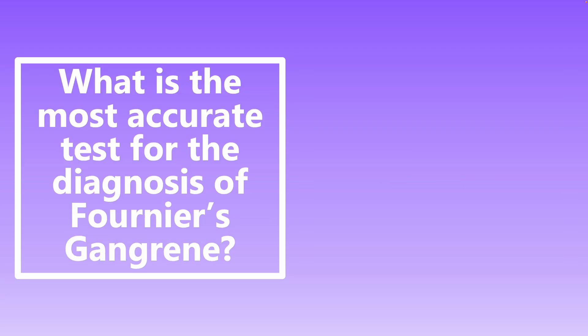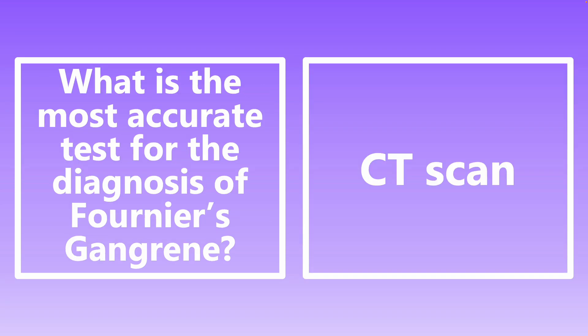What is the most accurate test for diagnosis of Fournier's gangrene? It's a CT scan. Fournier's gangrene is a necrotizing soft tissue infection in the perineum, showing air along the fascial planes or deep tissue involvement on CT. It's important to look in the groin in patients presenting with rash, fever, or obesity for signs of necrotizing infection.